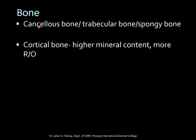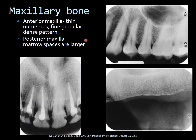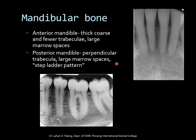Bone consists of cancellous bone — also called trabecular or spongy bone — and cortical bone, which has high mineral content and appears denser and more radiopaque. In the anterior maxilla, there is a thin, numerous, fine, granular, dense pattern of trabeculae, whereas in the posterior maxilla the marrow spaces could be slightly wider. In the mandible, the anterior region generally has thick, coarse, and fewer trabeculae with larger marrow spaces. The posterior mandible shows perpendicular trabeculae in large marrow spaces — this pattern of perpendicular lines is called the step-ladder pattern of trabeculae.